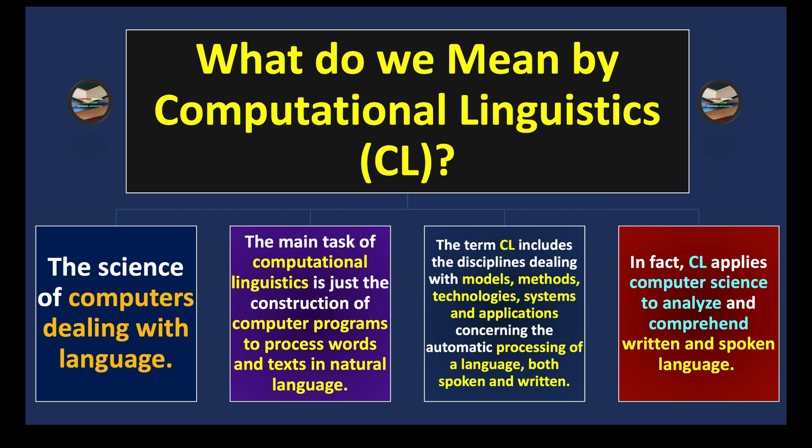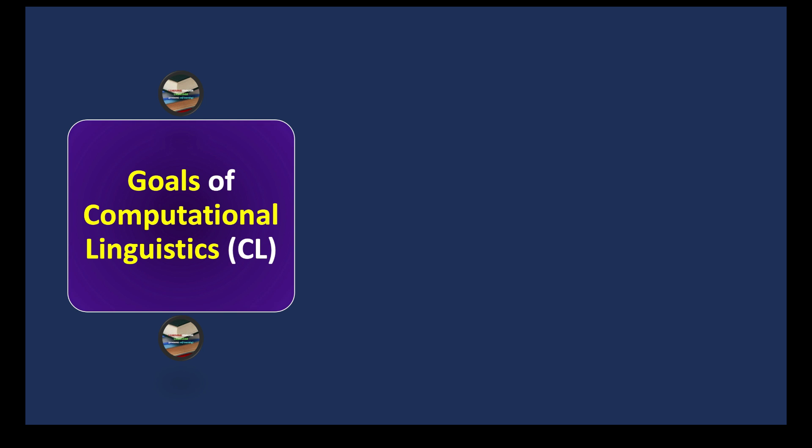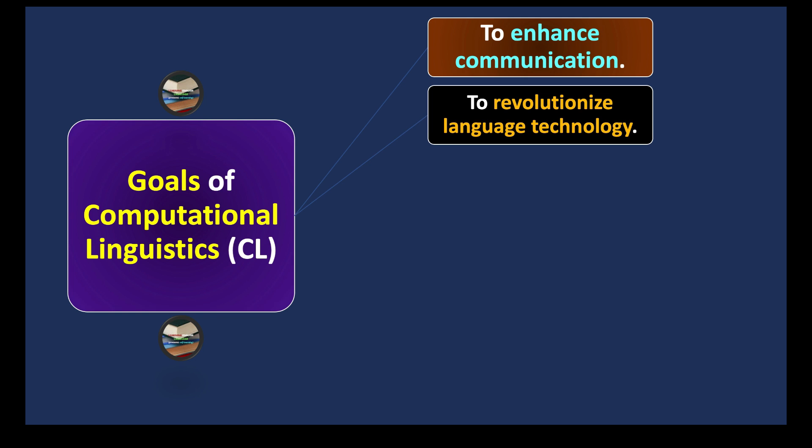We continue our discussion: Goals of computational linguistics. What does it want to attain and achieve? First, to enhance communication. Computational linguistics helps us enhance communication. You can see how in modern times through technology, communication is not only widened but improved and enhanced.